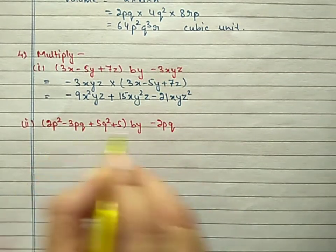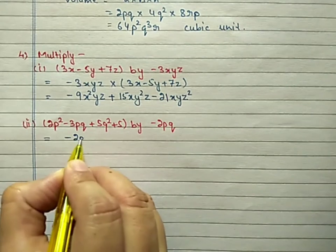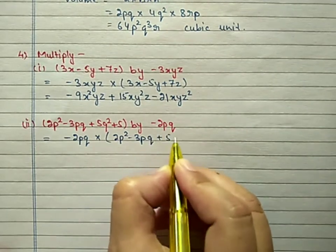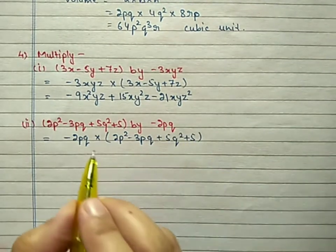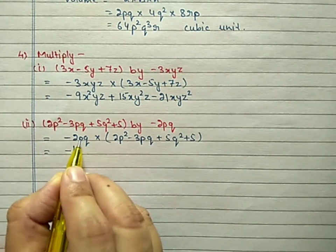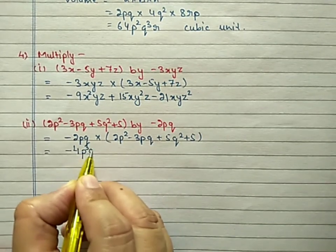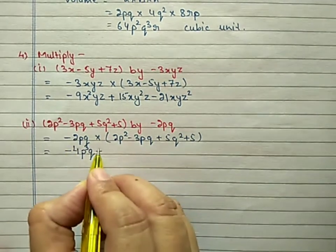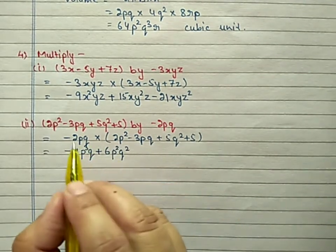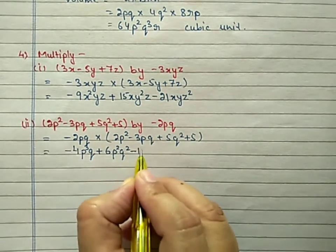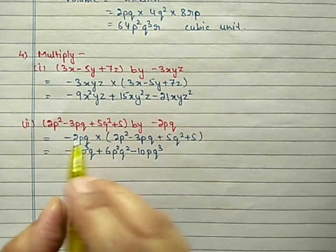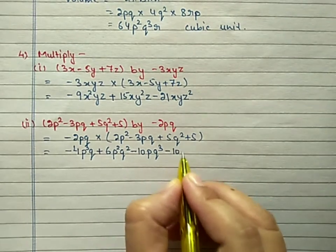Second part: Multiply −2pq by (2p² − 3pq + 5q² + 5). First term: −2 × +2 = −4, p³q. Second term: −2 × −3 = +6, p²q². Third term: −2 × +5 = −10, pq³. Fourth term: −2 × +5 = −10, pq. Answer: −4p³q + 6p²q² − 10pq³ − 10pq.